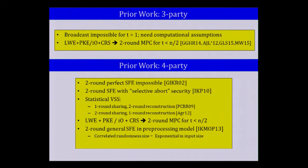Looking at prior work for both three-party and four-party settings: broadcast itself is impossible for t equals one in an information-theoretic setting, and you have to settle for computational assumptions. If you're willing to assume computational assumptions and additional setup, depending on the power of those assumptions, you can actually get two-round MPC for all t, and as long as you're in the honest majority setting, you can even get fairness.